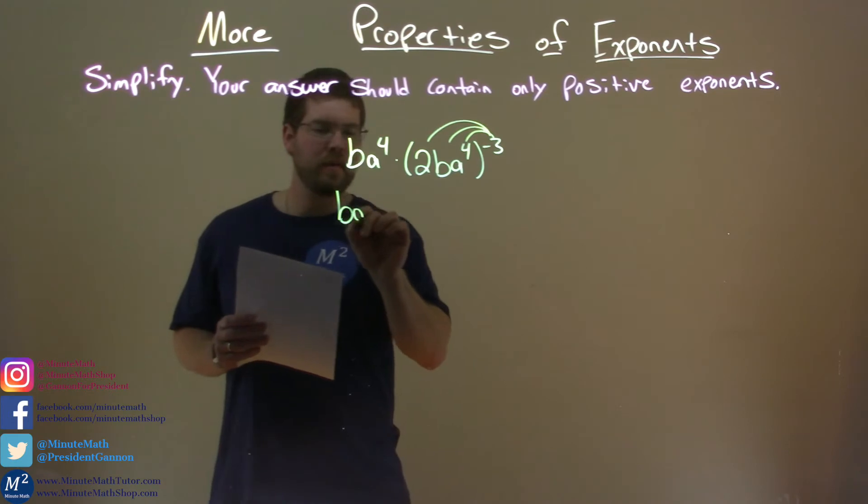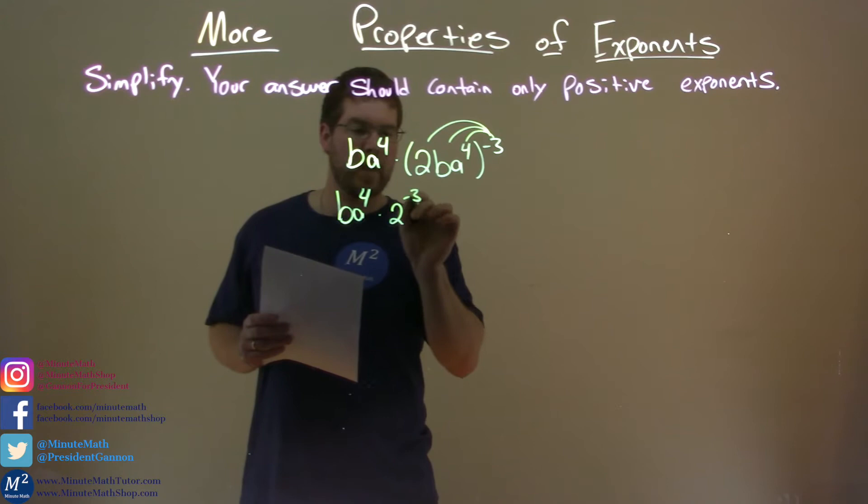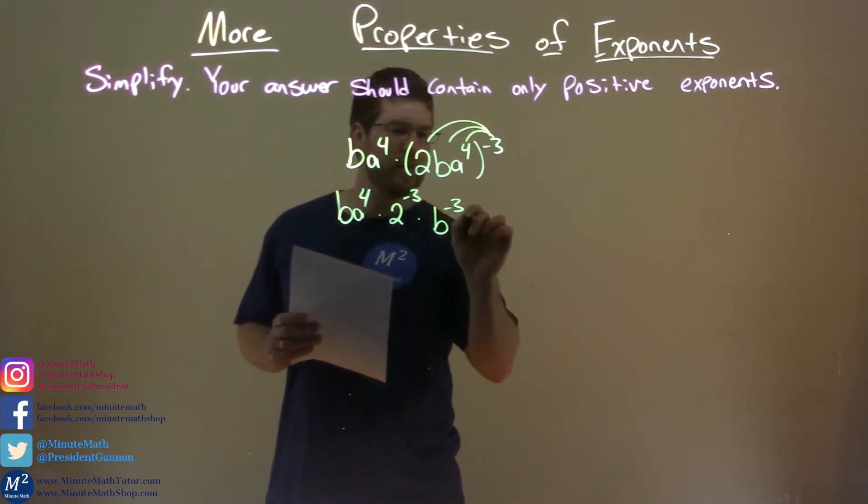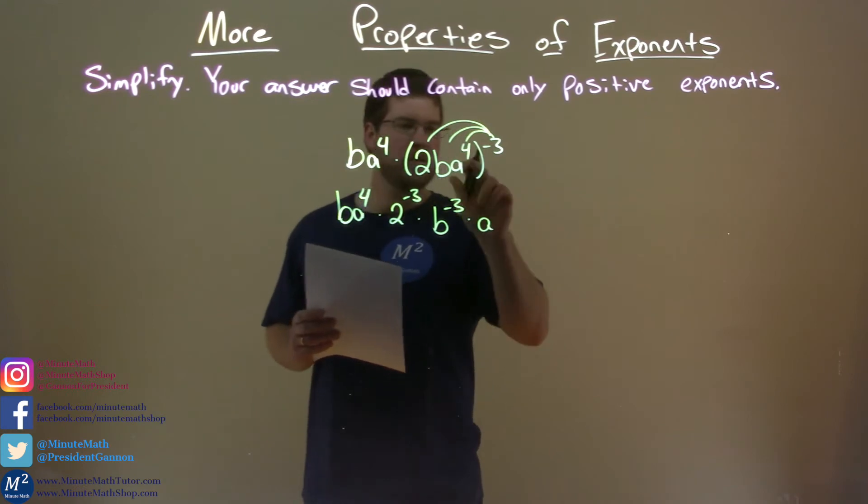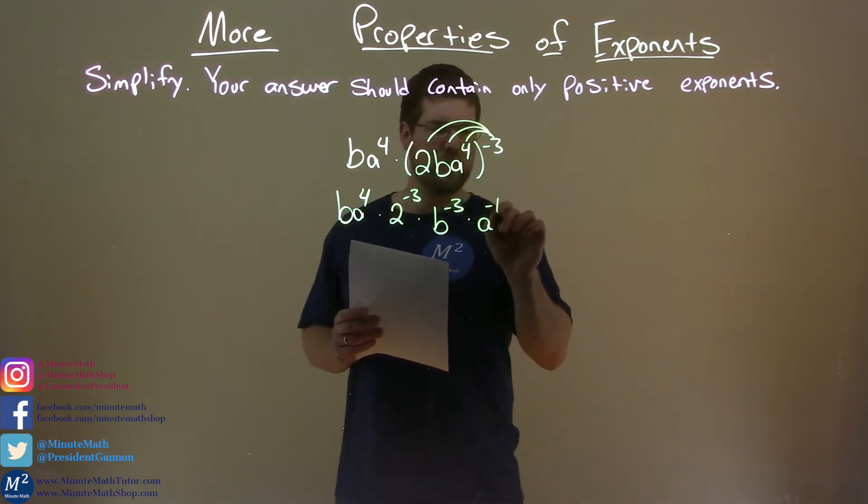So we have BA to the fourth power here times 2 to the negative third power times B to the negative third power times A to the 4 times negative 3. Remember, we multiply that out and we have a negative 12.